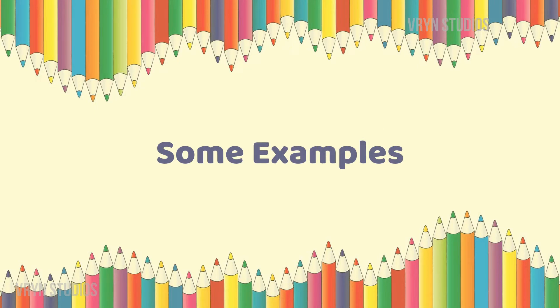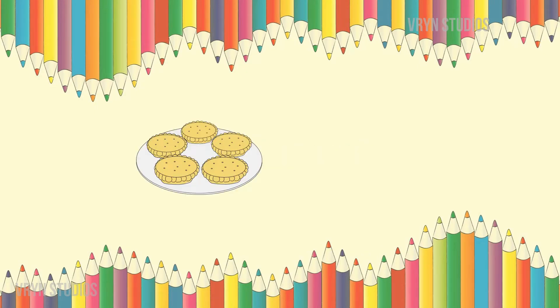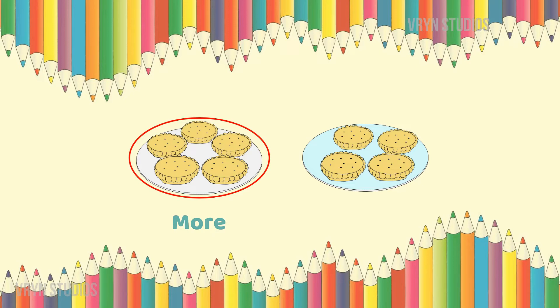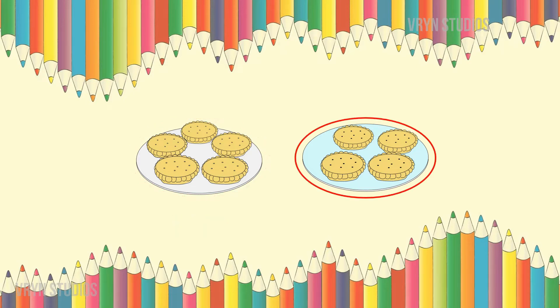Some examples. Here, you can see two plates of pies. The first plate has more pies, and the second one has less number of pies.